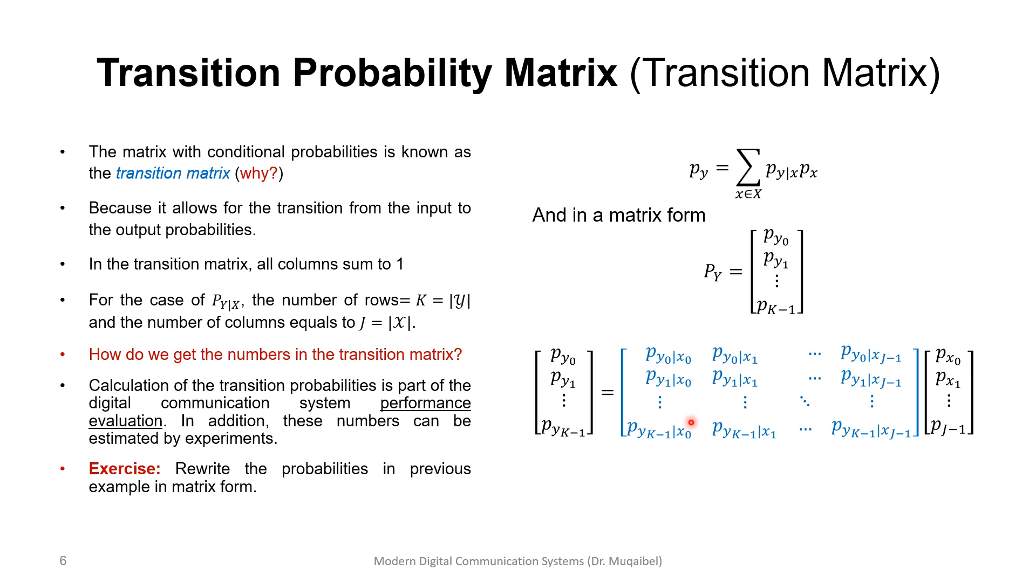That's the transition probability matrix that represents the discrete memoryless channel. I'll leave you with a question. Please write the probability in the previous example, which is reproduced here, in matrix form. Write the transition matrix or the transition probability matrix for this diagram. Please write your answer in the comment section. See you in coming videos.